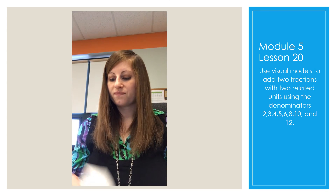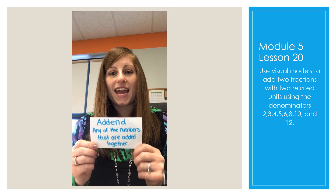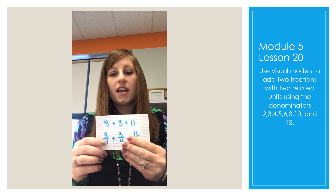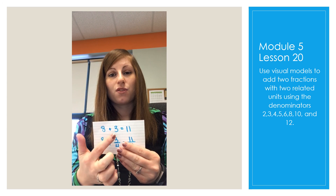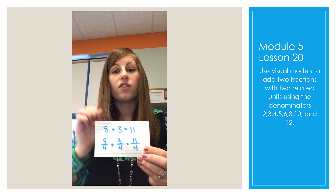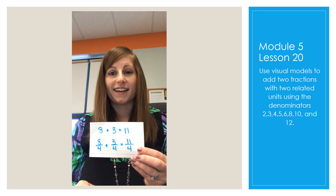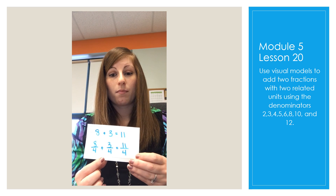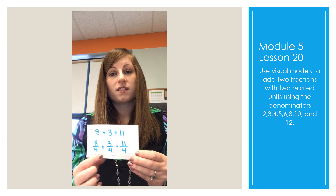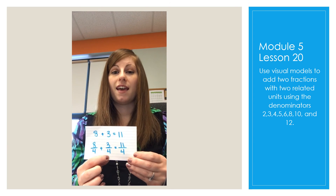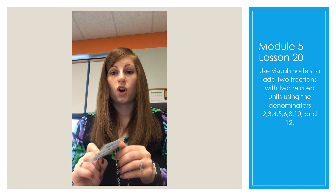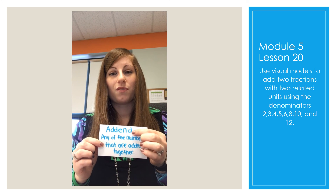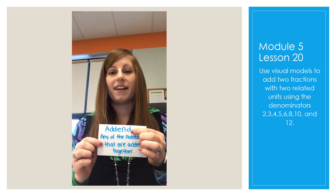The other word that we have to know today is addend. An addend is any of the numbers that you are adding together. For example, if we're working with whole numbers: 8 plus 3 equals 11 — 8 and 3 are the two addends. Today we're working with fractions; it doesn't change anything. We have 8 fourths plus 3 fourths equals 11 fourths, so 8 fourths and 3 fourths are the addends. When you see the word addend in the directions, we're not going to be scared of it — we'll just know they're talking about the numbers inside the problem that we are adding together.